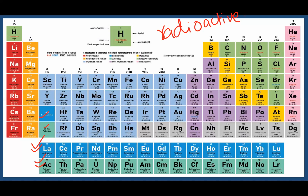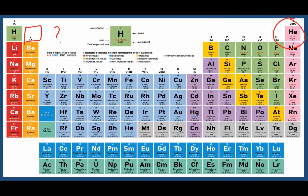Another question is why helium is placed in Group 18. According to increasing atomic number, helium should be placed elsewhere, but its properties resemble those of the noble gases — it is a non-reactive gas. That is why helium is present in Group 18, or Group 8A, because it is part of the noble gases.